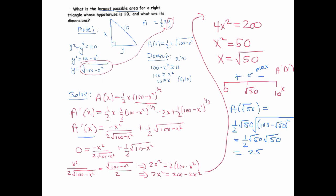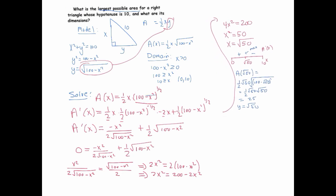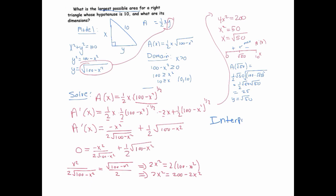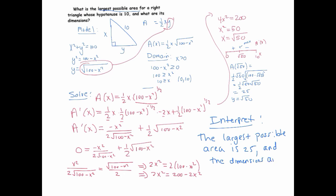So the maximum area is 25. For the dimensions, x = √50, and by symmetry y = √50 as well — plugging x = √50 into the Pythagorean theorem confirms y = √50. The largest possible area is 25, and the dimensions are x = y = √50.